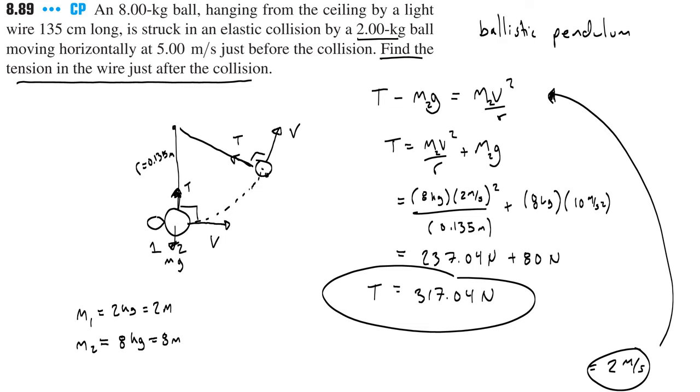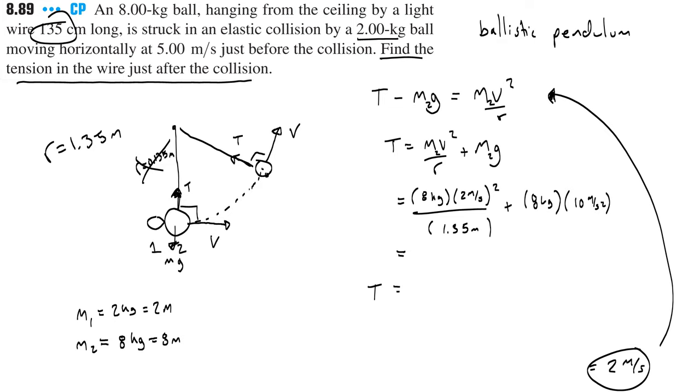Wait, wait, wait, no it's not because I can't convert centimeters to meters. The radius should be 1.35 meters, which actually has a pretty good effect. So instead you're going to get 23.7 newtons plus 80 newtons, giving you a grand total of 103.7 newtons. Remember if you use 9.8, you get something slightly different.